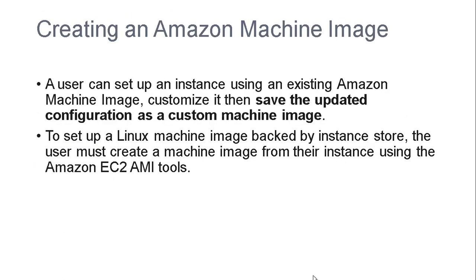Creating an Amazon Machine Image: a user can set up an instance using an existing machine image, customize it, then save an updated configuration as a custom machine image. To set up a Linux machine image backed by the instance store, the user must create a machine image from their instance using the Amazon EC2 AMI tools.